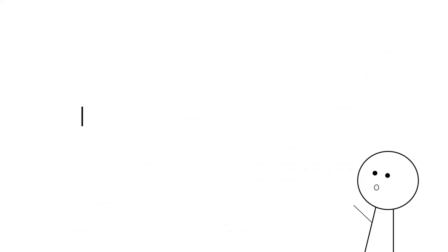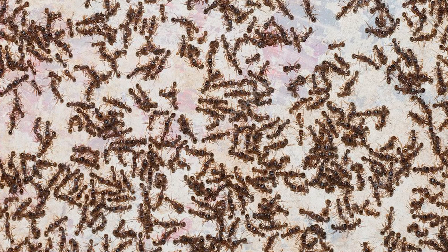For the last group, we have chemical mass recruitment. As the name suggests, strategies in this group will involve a lot of ants. These group strategies involve using a chemical trail to forage.